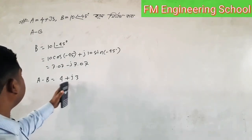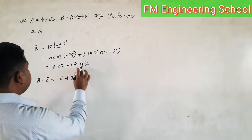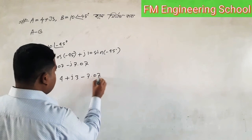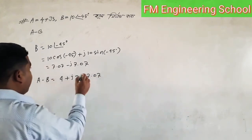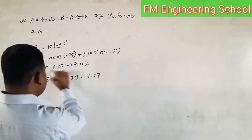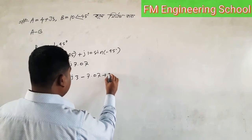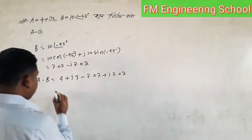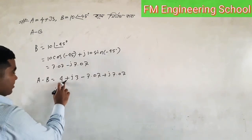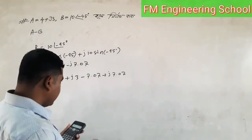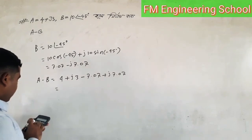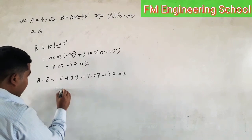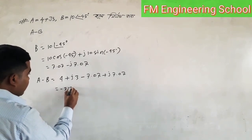The second component is minus 7.07. If we have 4 here, we get minus 7.07. And if we have 4 here, we get minus 3.07.